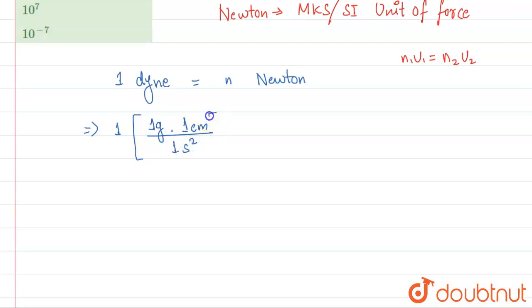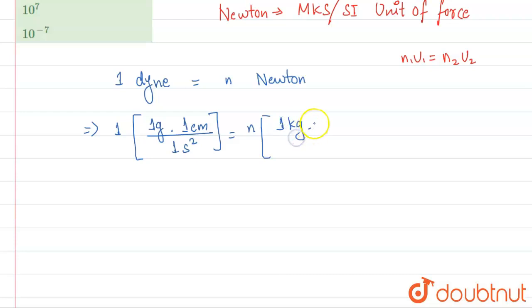And N newtons is given by one kilogram times one meter divided by one second squared.